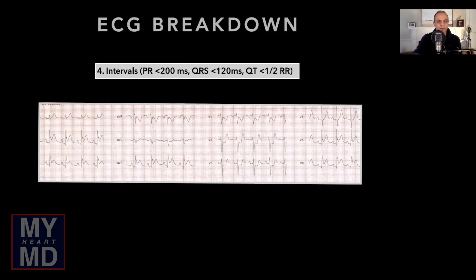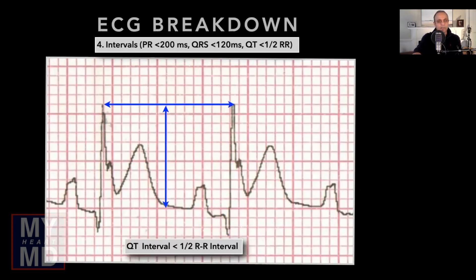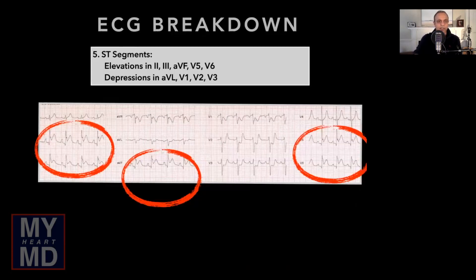The intervals appear within normal limits. The PR interval is less than 200 milliseconds — about 140 milliseconds counting the boxes. The QRS is on the narrow side, so it's not a left bundle branch block. The QT interval looks normal using the quick-and-dirty technique: the T wave ends before the R-R midway point, which it does. That too is quite reassuring.